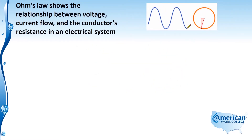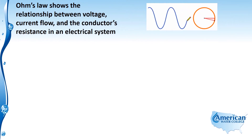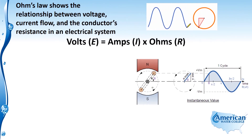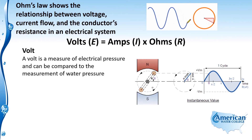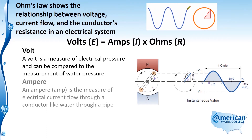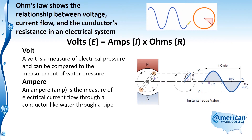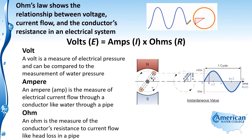Ohm's law shows the relationship between voltage, current flow, and the conductor's resistance in an electrical system. The formula is: volts equals amps times ohms, or current flow times resistance. A volt is a measure of electrical pressure, comparable to water pressure. An amp, or ampere, is the measure of electrical current flow through a conductor, like water through a pipe. An ohm is the measure of the conductor's resistance to current flow, like head loss in a pipe.